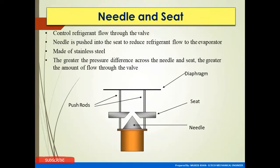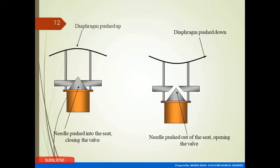Needle and seat control refrigerant flow through the valve. The needle is pushed into the seat to reduce refrigerant flow to the evaporator; it is made of stainless steel. The greatest pressure difference across the needle and seat produces the greatest amount of flow through the valve. When the diaphragm pushes up, the needle pushes into the seat, closing the valve. When the diaphragm pushes down, the needle pushes out of the seat, opening the valve to allow refrigerant to flow.